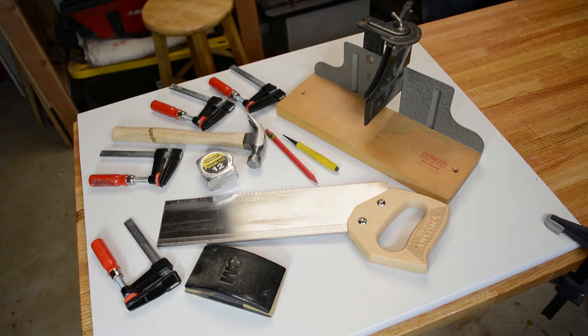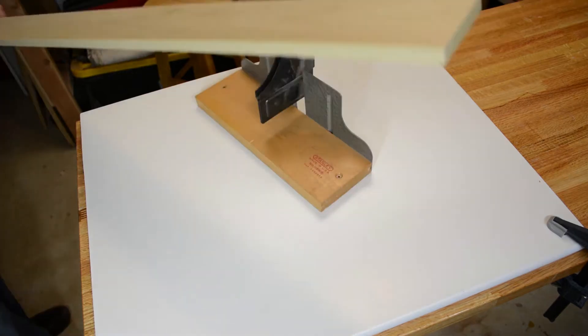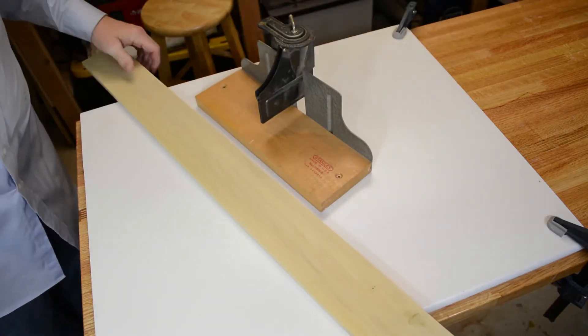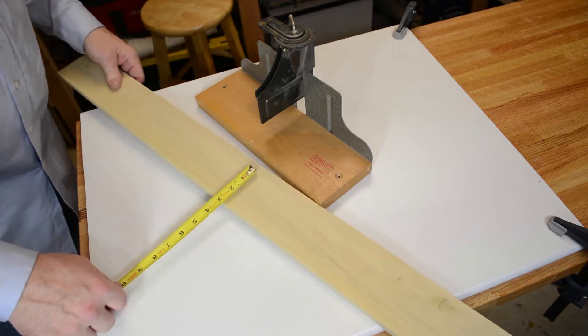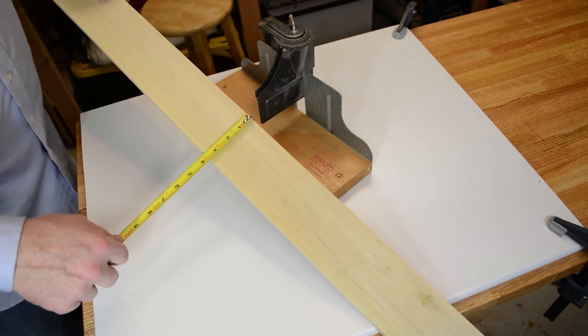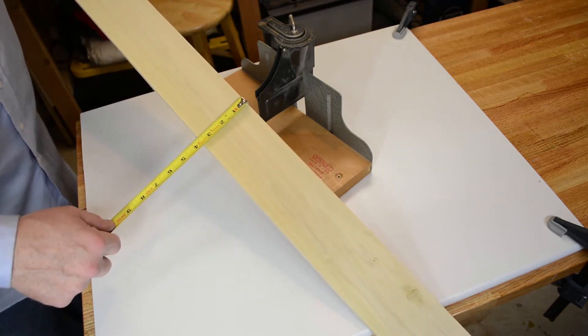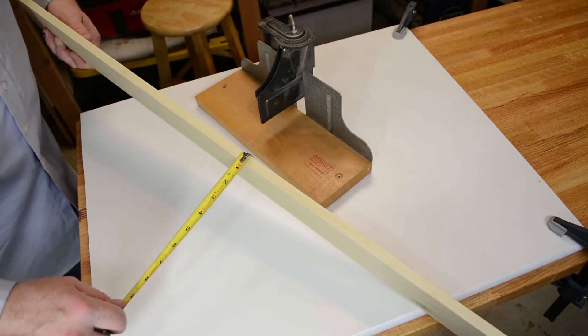and then of course a tape measure and a pencil. And that's about all we're going to need. Let's talk about the miter box for a minute first. I've got an old-fashioned one here. This one is an antique that I've had in the family for a while. But when you go into the hardware store or you go into a home center, you're going to ask for something called a miter box or a miter box and saw.